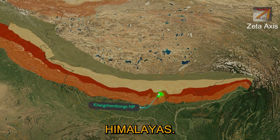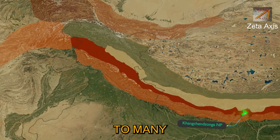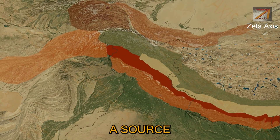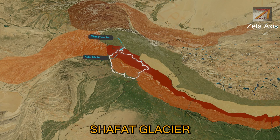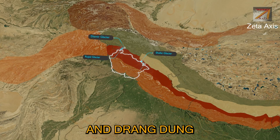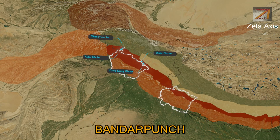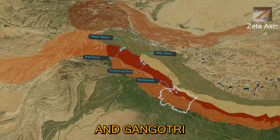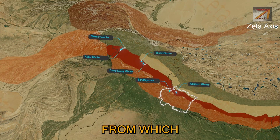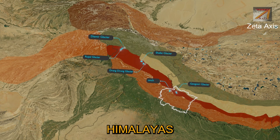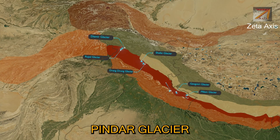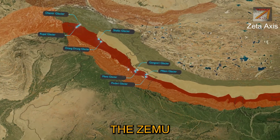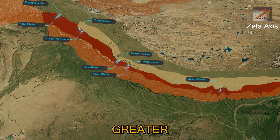Greater Himalayas is also home to many important glaciers which are the source of important rivers. Important glaciers include Diamir Glacier near Nanga Parbat, Rupal Glacier, Safed Glacier, and Drang Drung Glacier of Jammu and Kashmir. Bandarpunch Glacier, from which Yamuna originates, and Gangotri Glacier, from which Ganga originates, are both in Uttarakhand. Uttarakhand also has Milam Glacier, Pindari Glacier, and Mana Glacier. The Zemu Glacier of Sikkim is also part of Greater Himalayas.